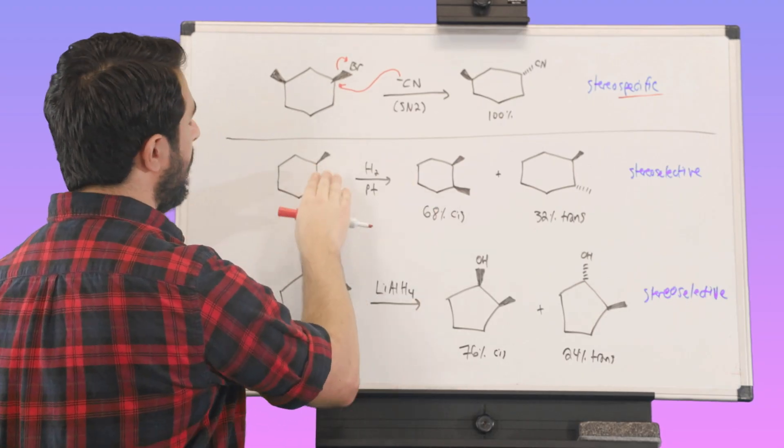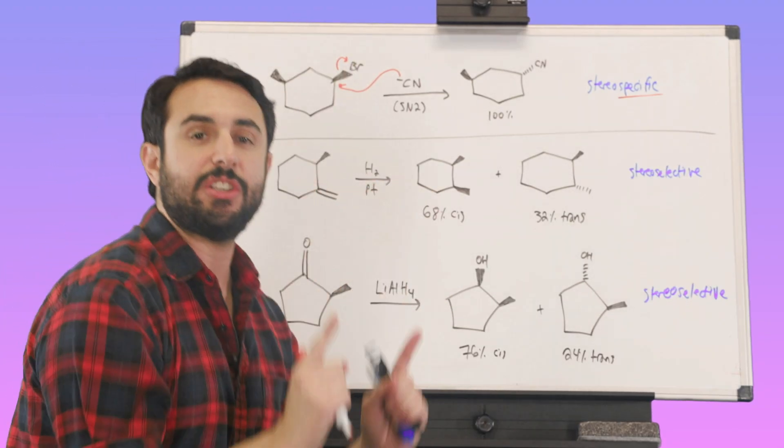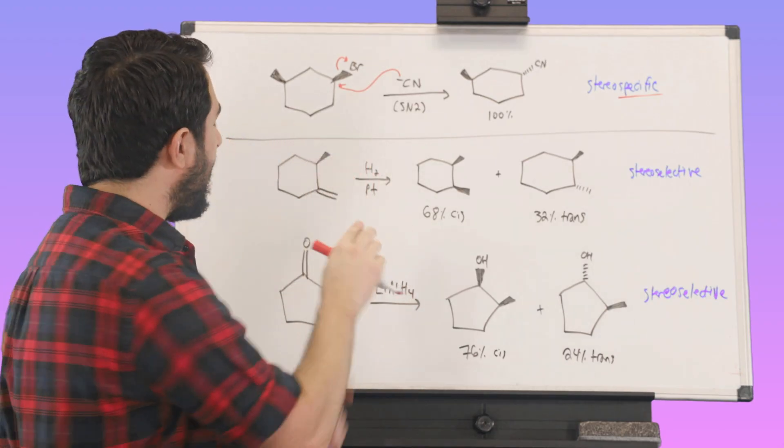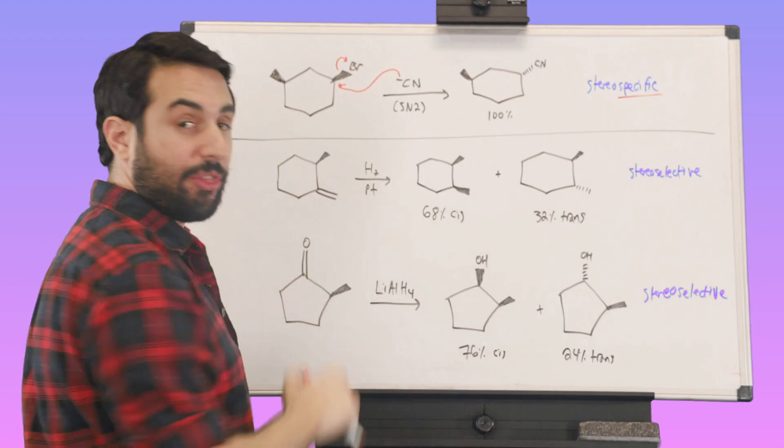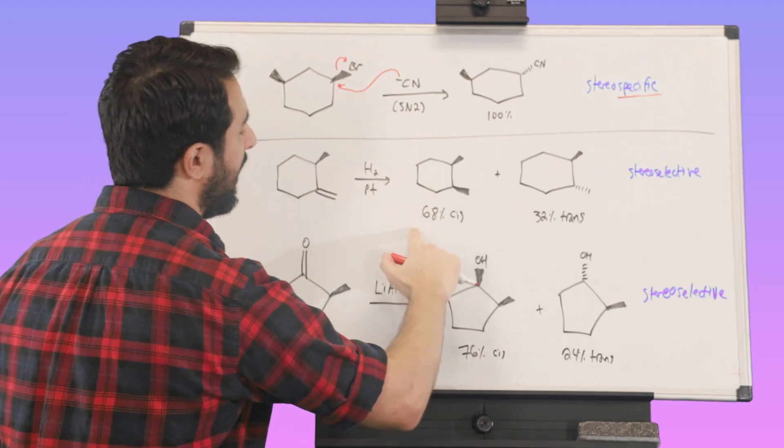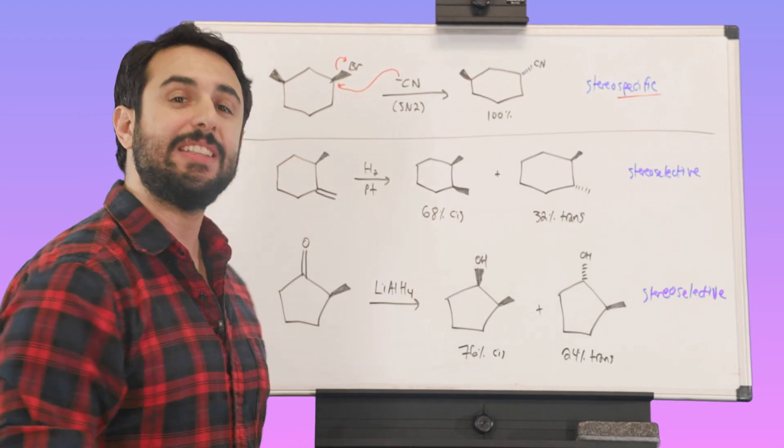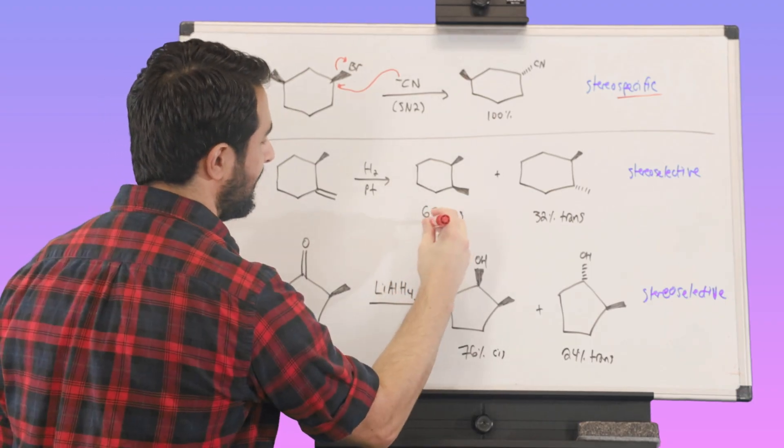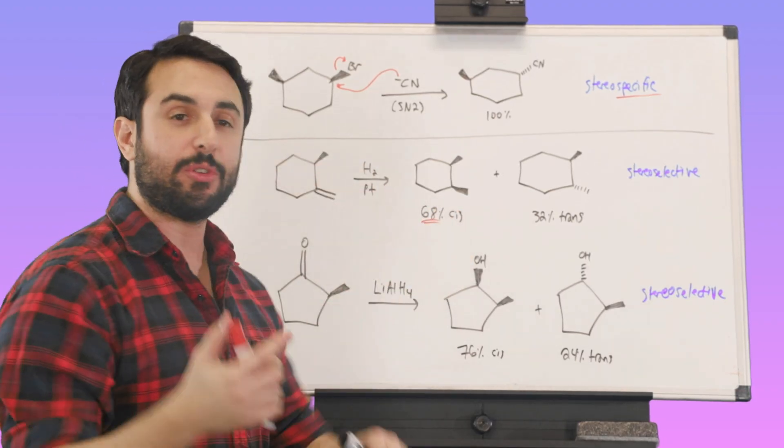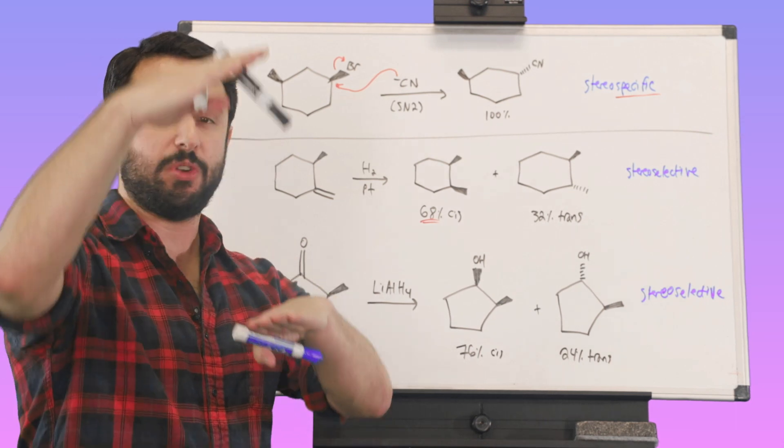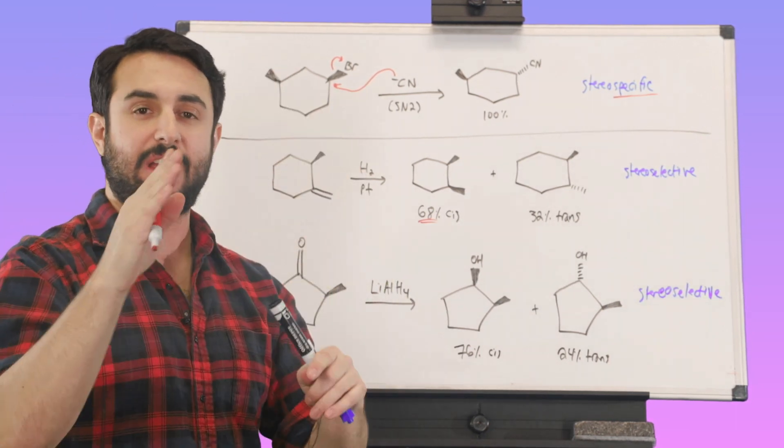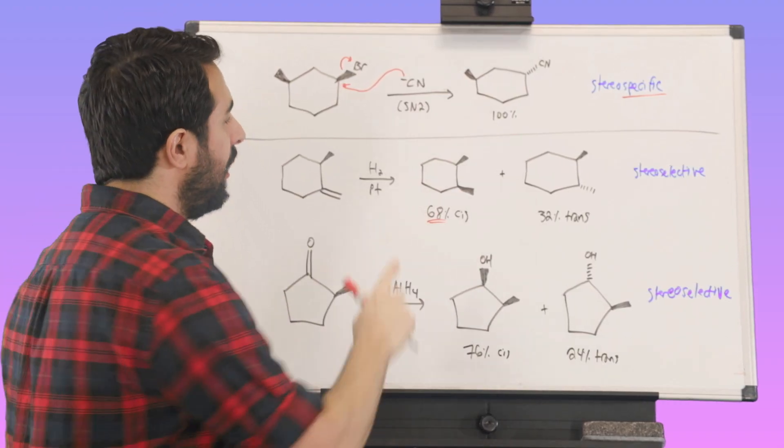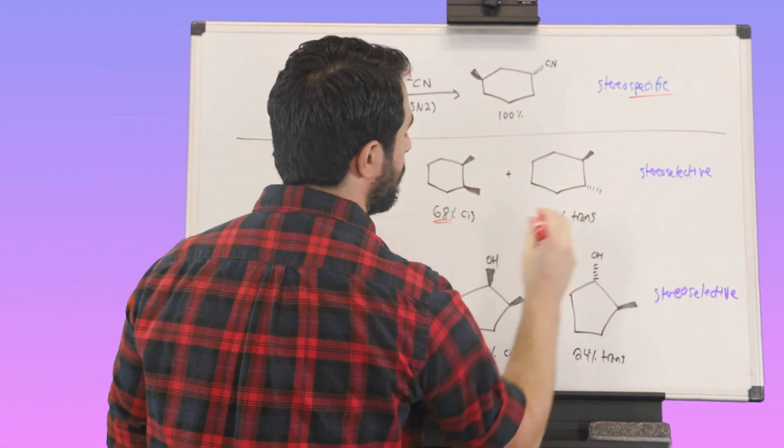Now for very obvious reasons, one of these two situations is going to be more sterically favorable. The methyl sticking down is going to be not quite as favorable energetically because of the slight additional repulsion that is going to be occurring. So if it lowers onto the platinum metal, such that the hydrogens add on the bottom and push that methyl up to give us the cis-dimethyl product, that's going to be more favorable, and that is reflected in the product mixture. We've got 68% cis.